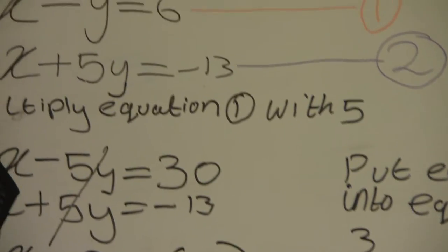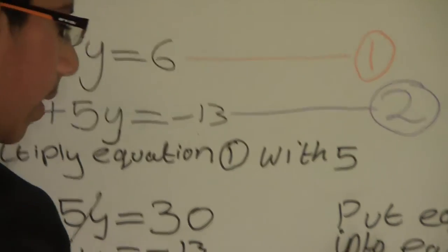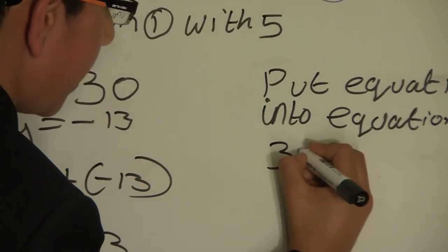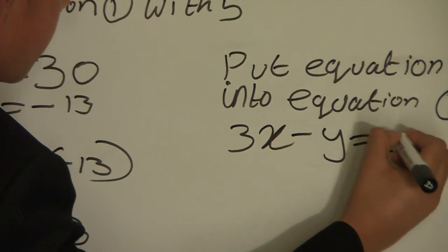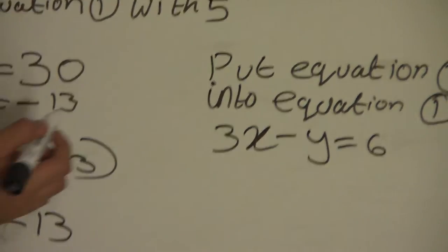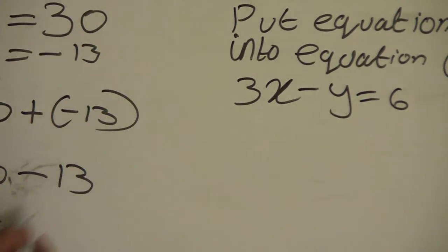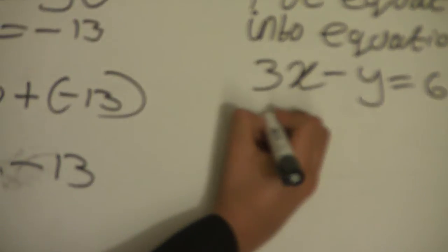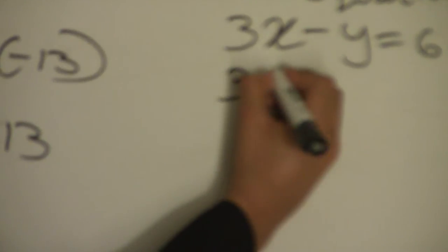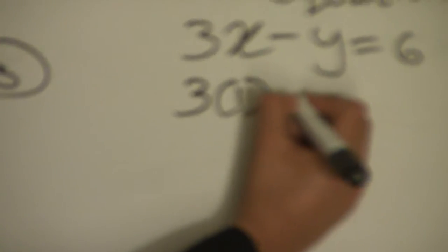I'm just writing down what equation 1 is to make it easier: 3x minus y equals 16. So we'll write 3 bracket 1, because we have to write 1 instead of x. So 3 bracket 1 minus y equals 16. We'll have to multiply 3 and 1, so that equals 3.